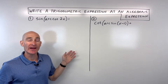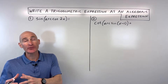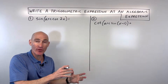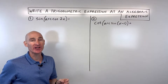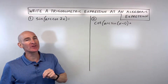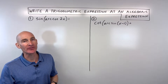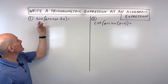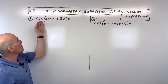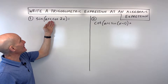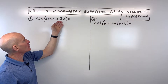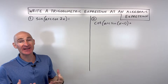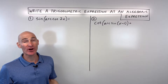In this video, you're going to learn how to write a trigonometric expression as an algebraic expression, and we're going to go through two examples together. So let's dive into this first example: how do we figure out how to write the sine of arc cosine of 2x as an algebraic expression?